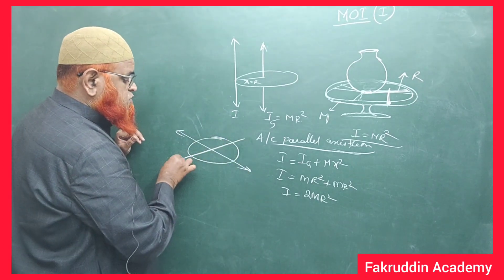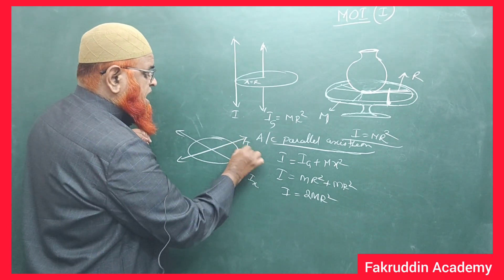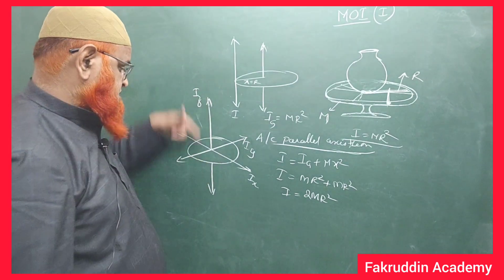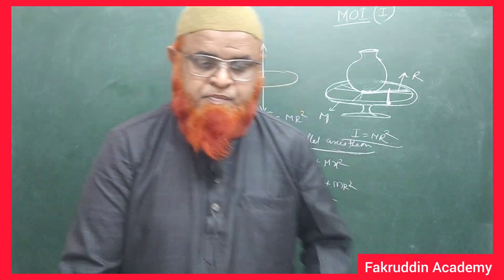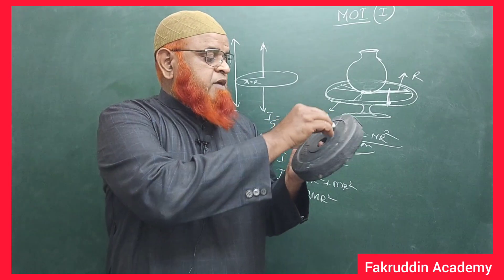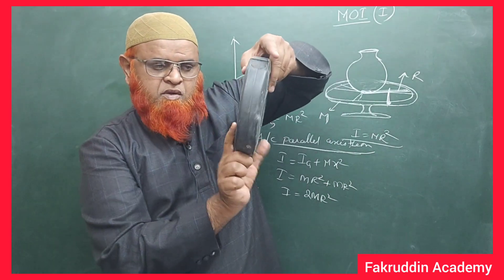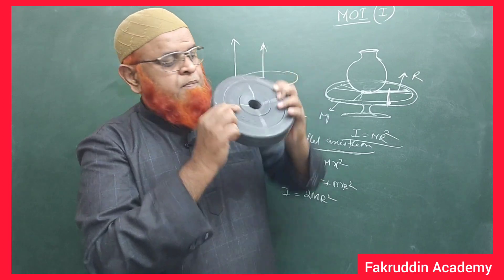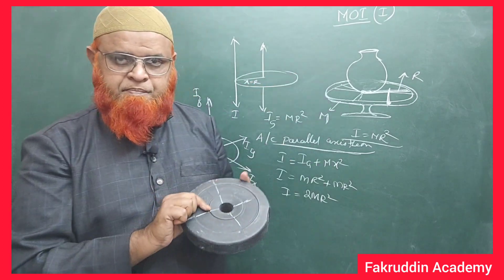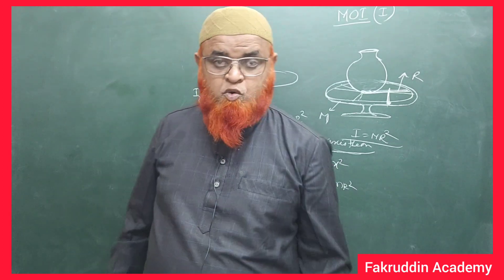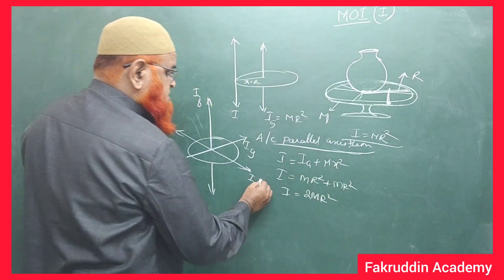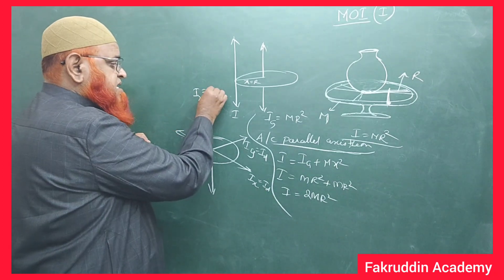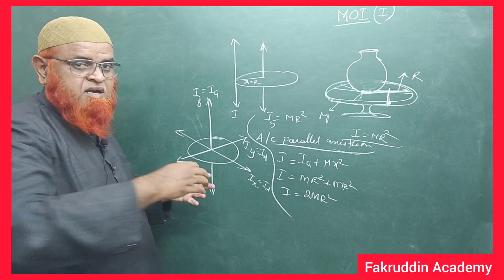Consider three axes: Ix, Iy, and Iz. Ix and Iy are two diameter axes in the plane of the ring, and Iz is the axis perpendicular to the plane. We are rotating the wheel with respect to Ix, and also with respect to Iy. Both of these are moment of inertia with respect to the diameter, so Ix = Id and Iy = Id. And Iz is nothing but Ig.